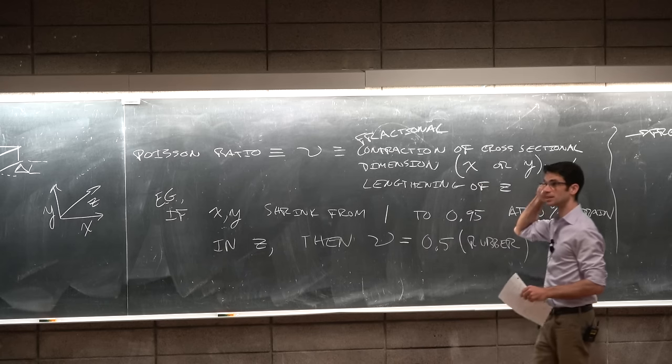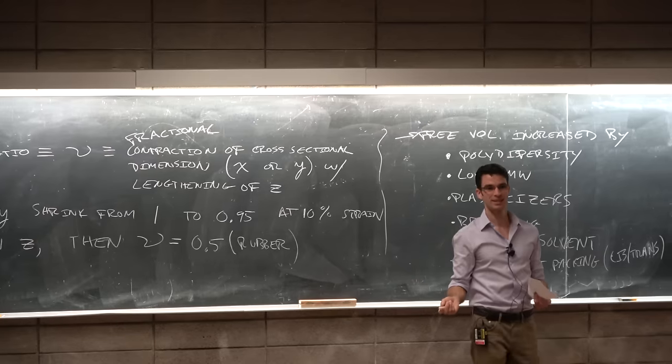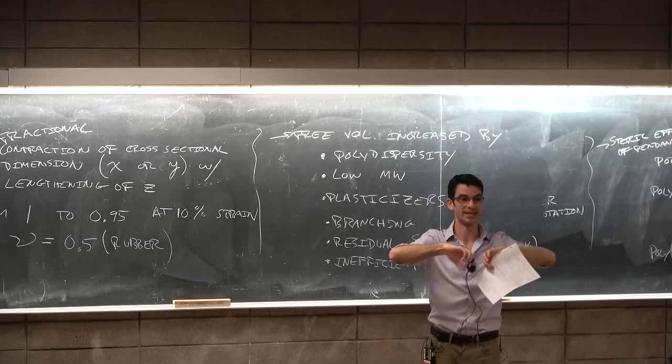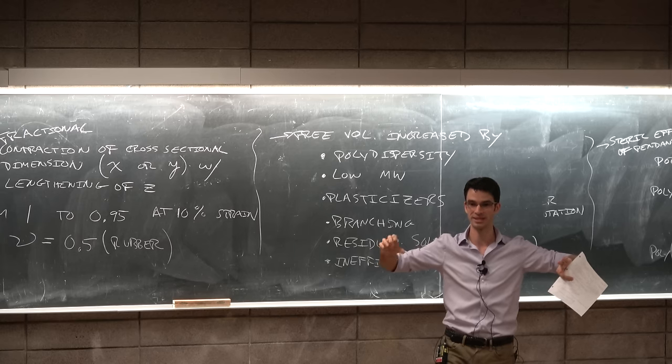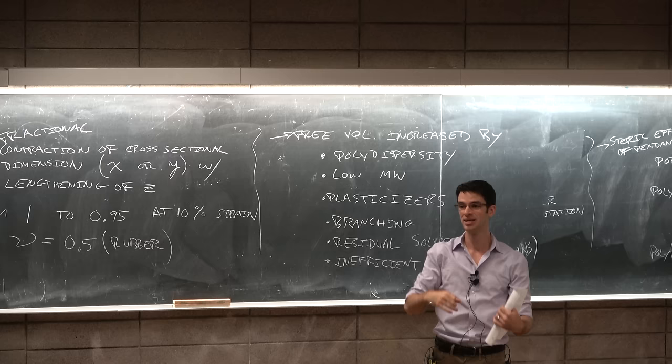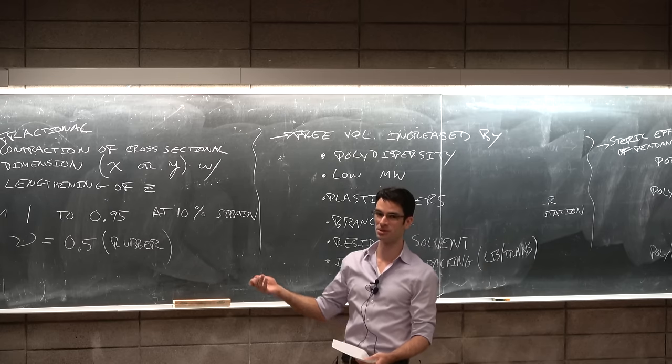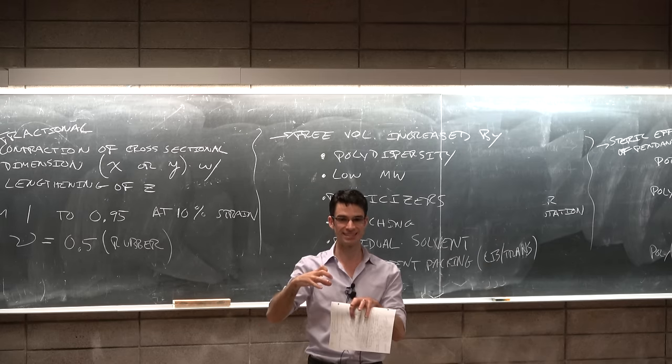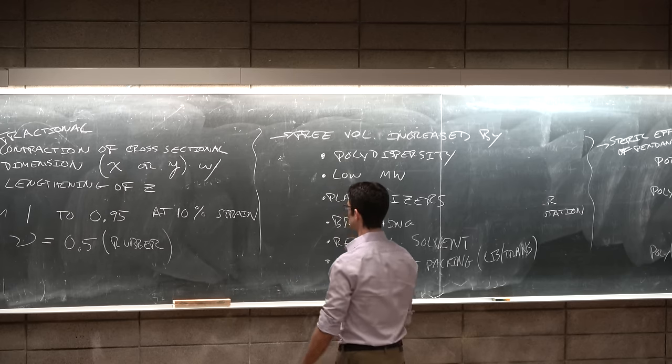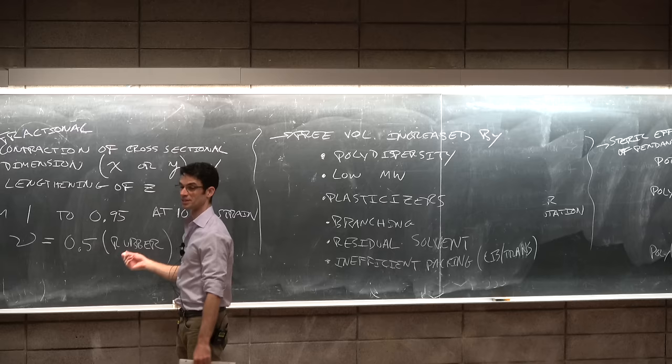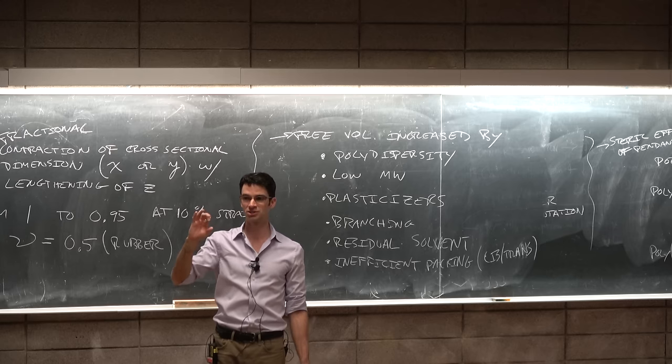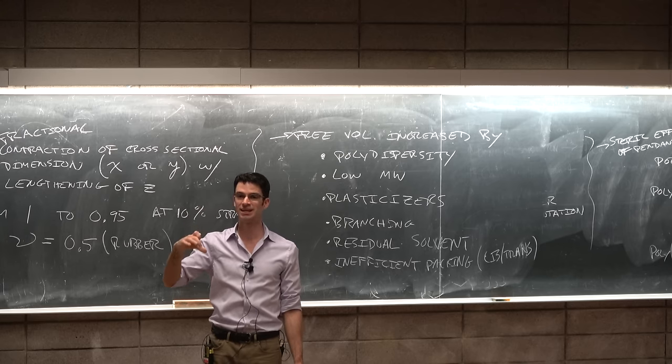And we can imagine there's a field called mechanical metamaterials that have bizarre... So we're used to things shrinking in the transverse dimension as we apply an axial strain. As we apply a longitudinal strain, things shrink in the axial dimension and vice versa. We press on things in the longitudinal direction and the transverse dimensions increase. There's a field called mechanical metamaterials where you devise struts and things to allow things to actually expand in the transverse dimension, which is called a negative Poisson ratio.